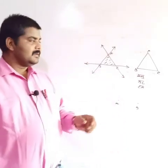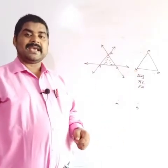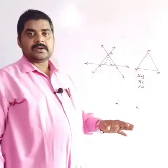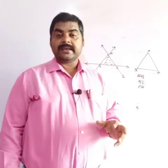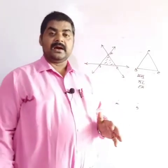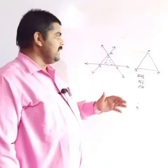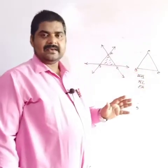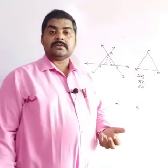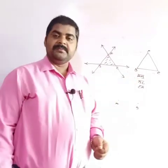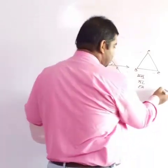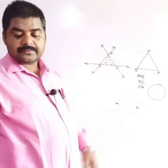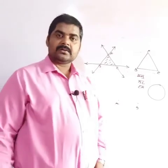A triangle is made up of three straight line segments, which is why it is studied under rectilinear figures. There are two types of figures: rectilinear figures, which are made up of straight line segments such as AB, BC, and CA, and curved figures, which are closed but not made of straight line segments. A triangle is a rectilinear figure, not a curved one.